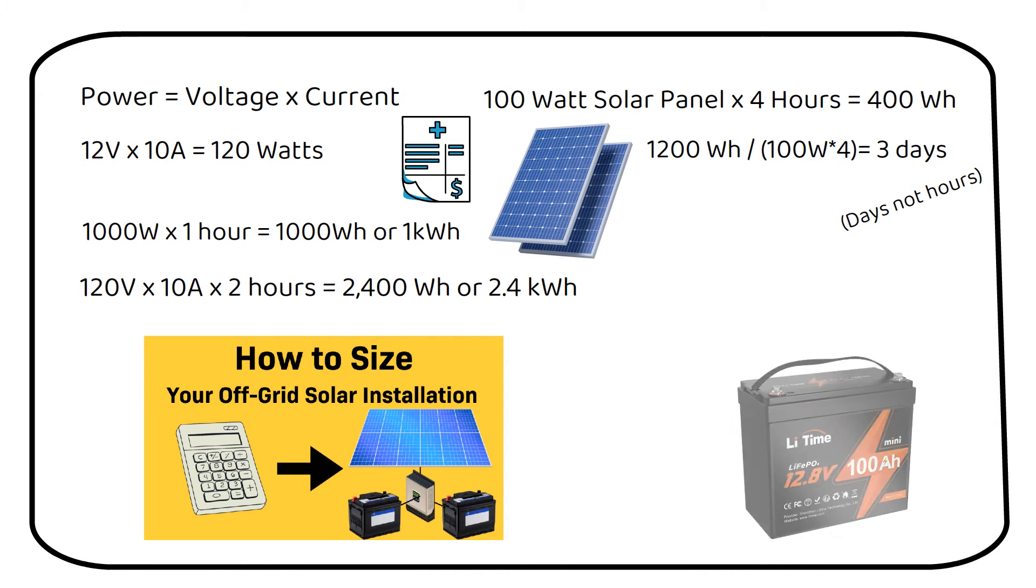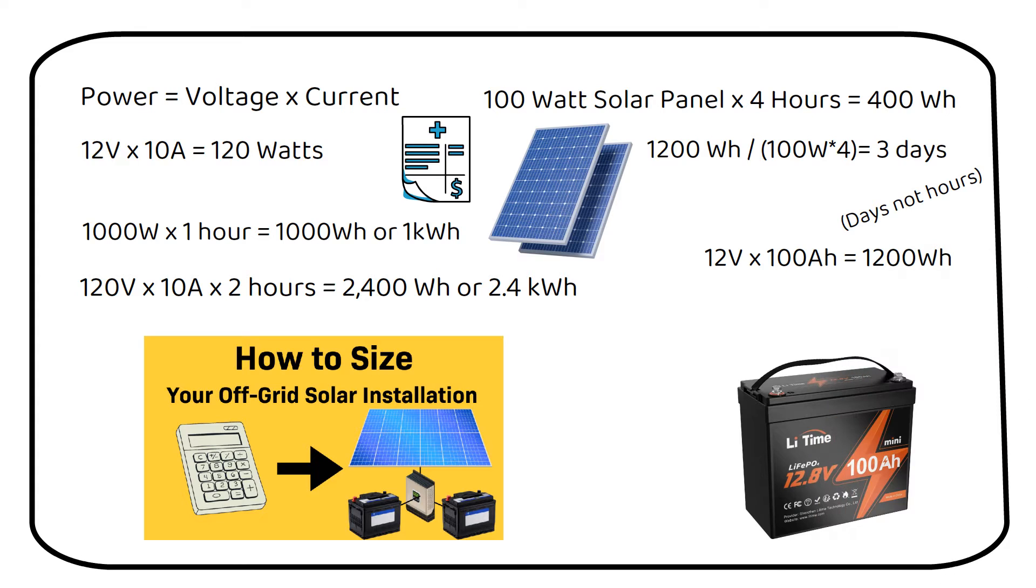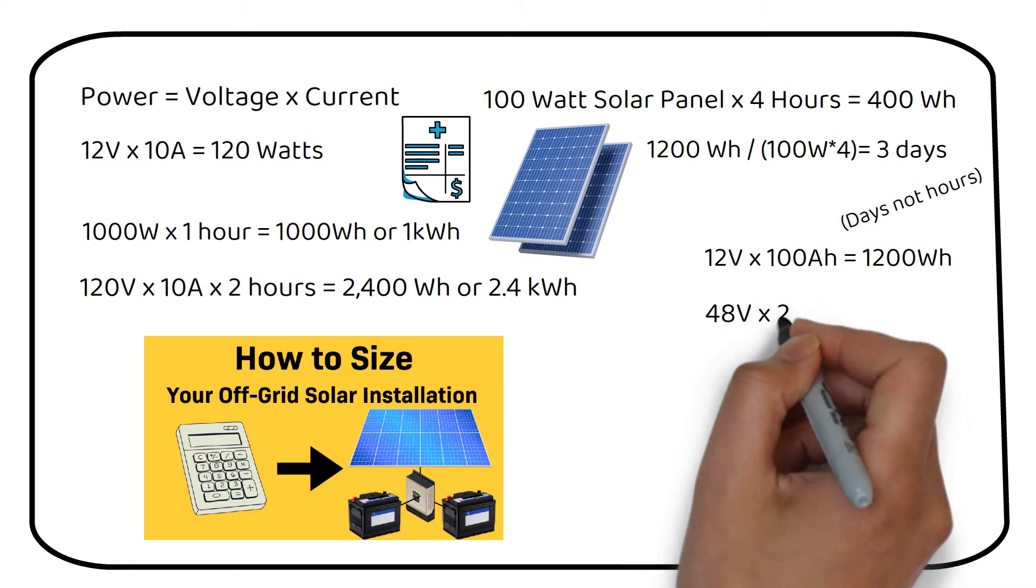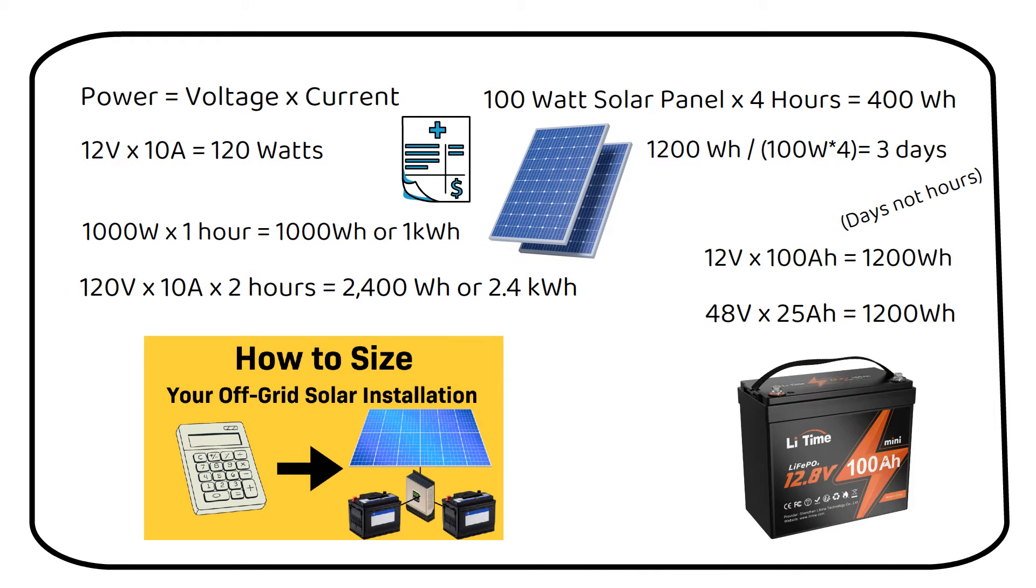Watt-hour can also be used in battery systems. A 12 volt battery with a capacity of 100 amp-hours has a stored energy potential of 1200 watt-hours. A 48 volt battery with a capacity of 25 amp-hours also has a stored energy potential of 1200 watt-hours. So watt-hour is a combination of voltage and capacity. It's important to use watt-hours as an indication of total energy storage in a battery.